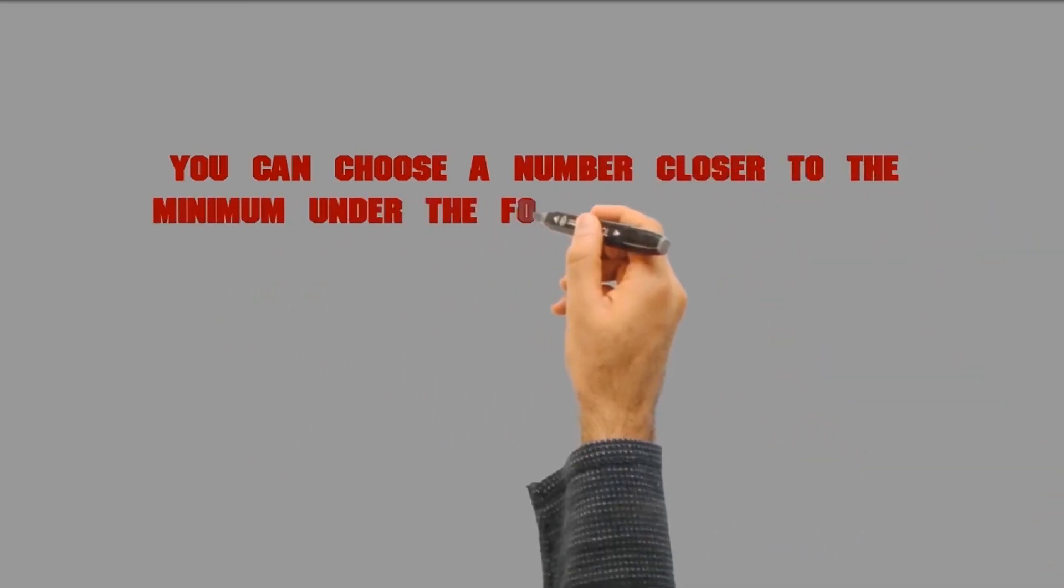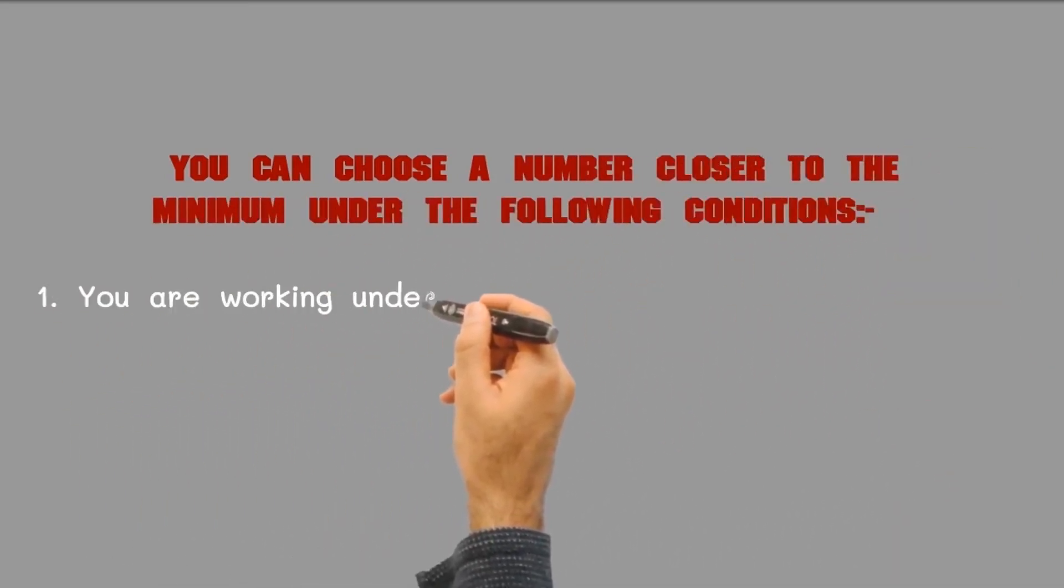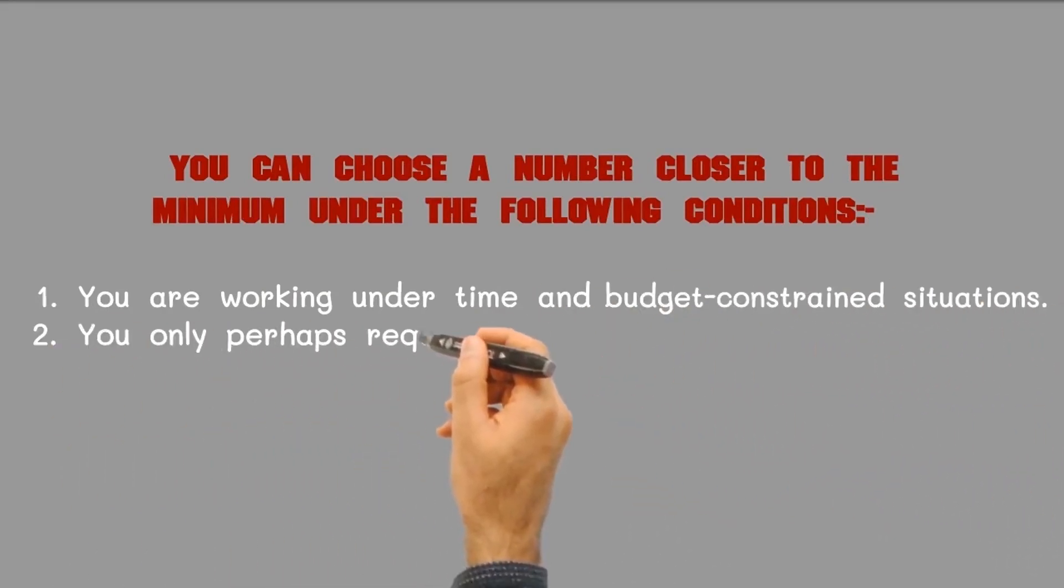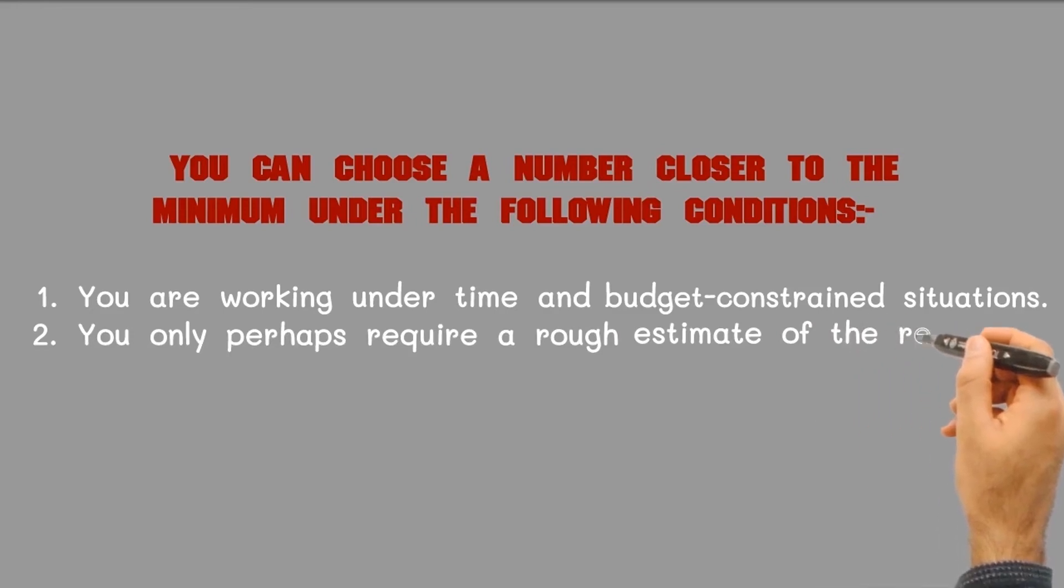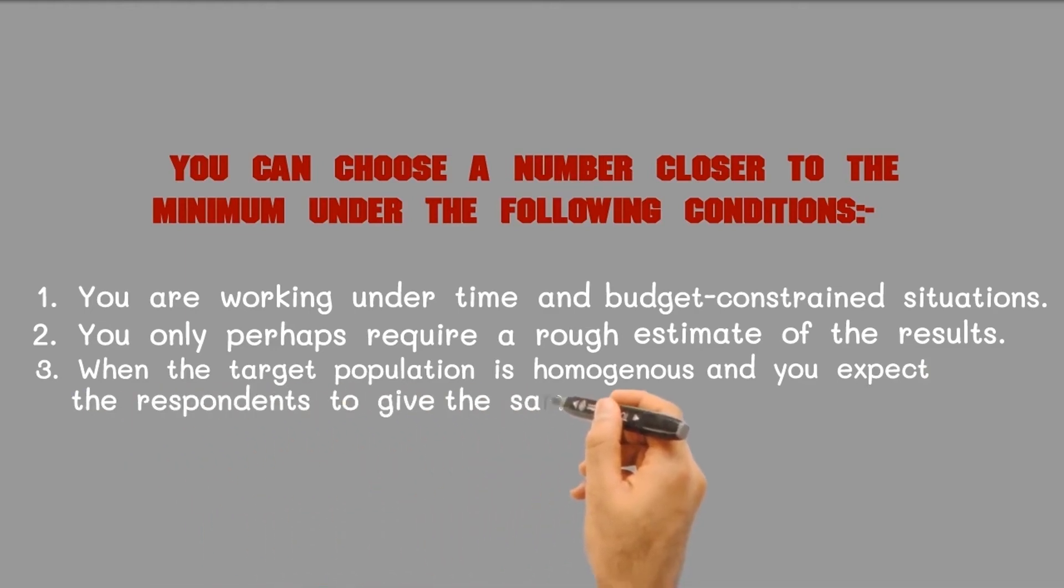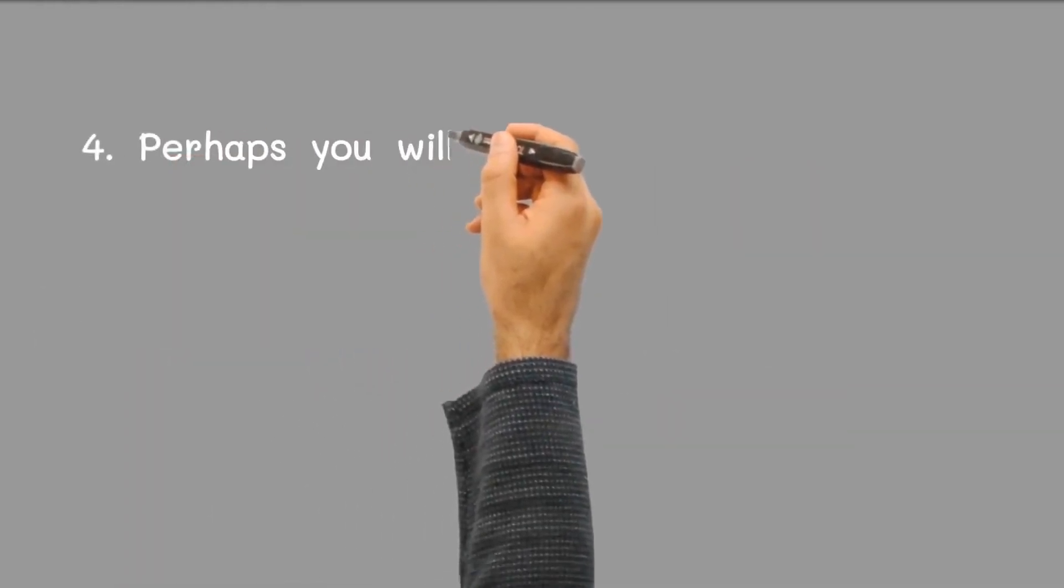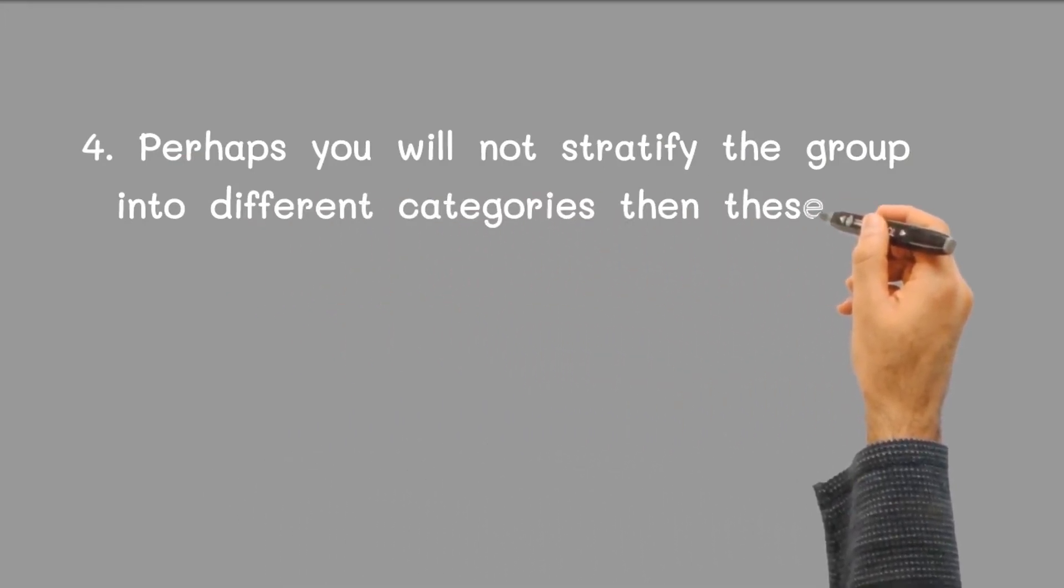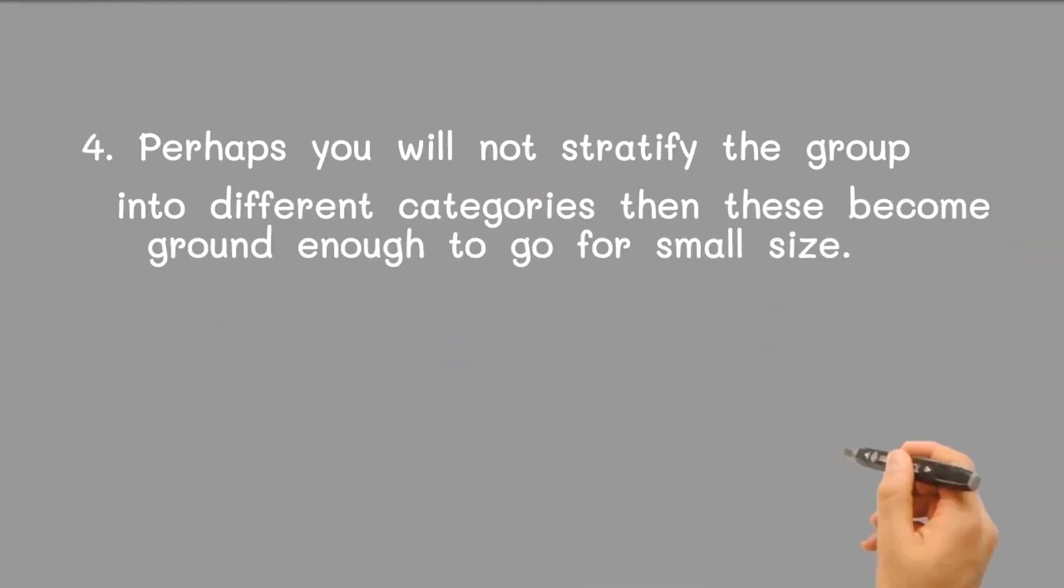You can choose a number closer to the minimum under the following conditions. One, you are working under time and budget constrained situations. Two, you only require a rough estimate of the results. Three, when the target population is homogeneous and you expect the respondents to give the same answers. Four, perhaps you will not stratify the group into different categories. These become ground enough to go for small size.